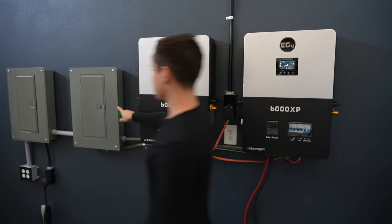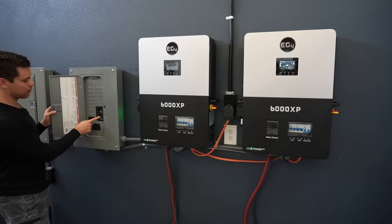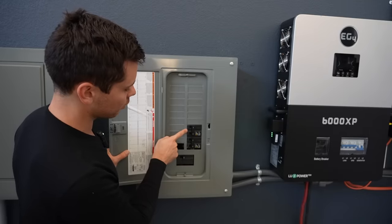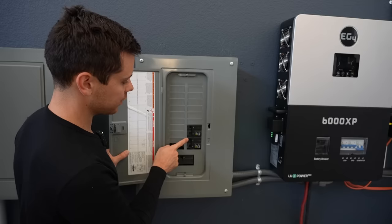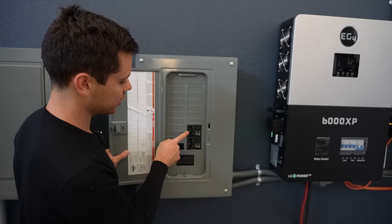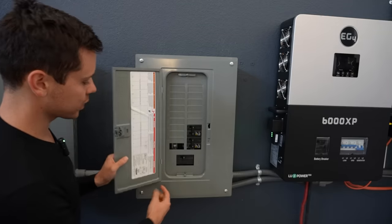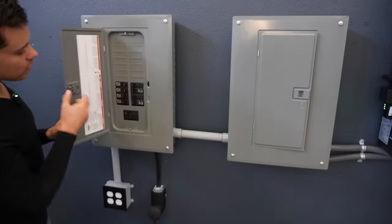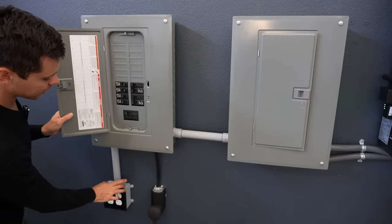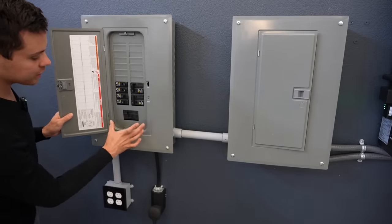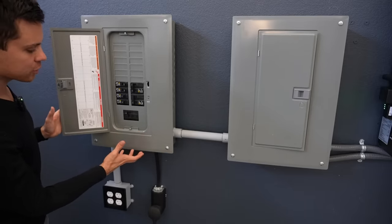Then you use this as the combiner box and for each unit we have a 40 amp breaker. This is inverter number one and inverter number two. This is hot one and hot one supplying one bus bar and then hot two and hot two supplying the other bus bar. And then we have a disconnect. This runs over to the other panel and this is our load center.